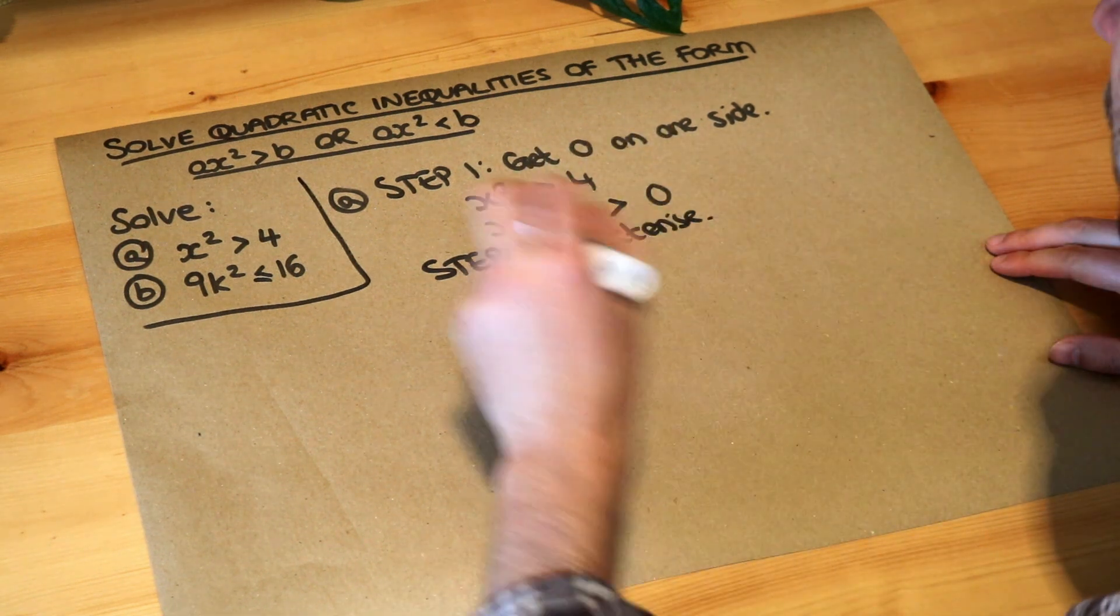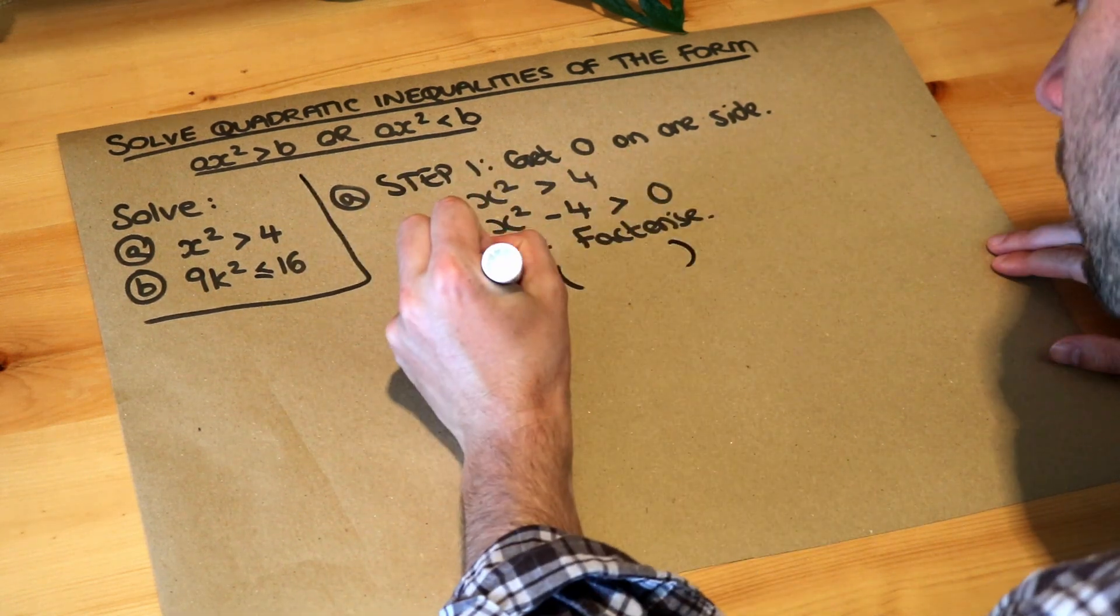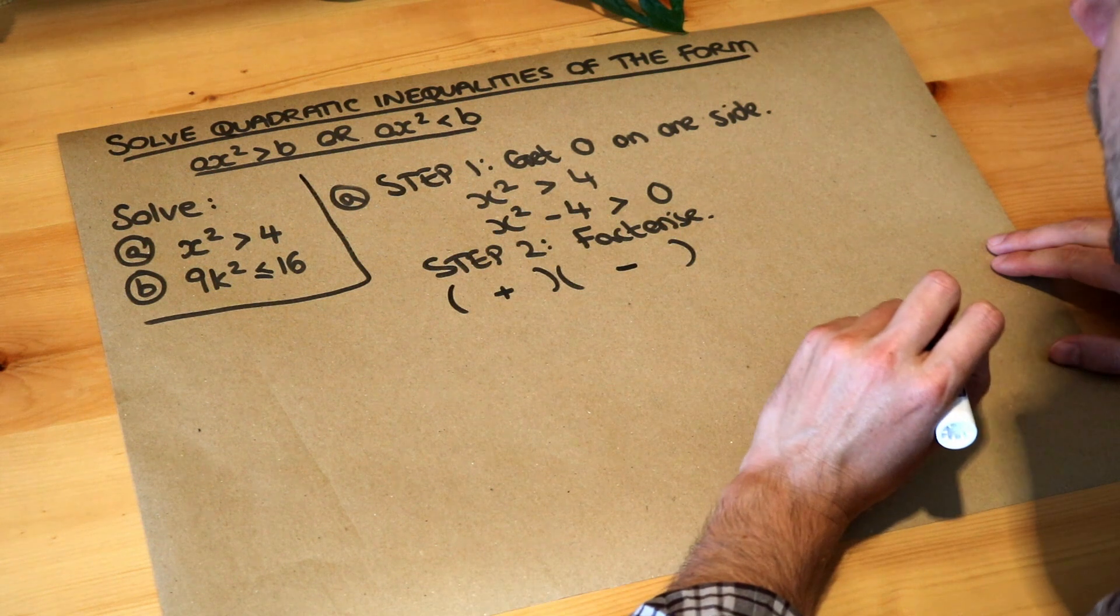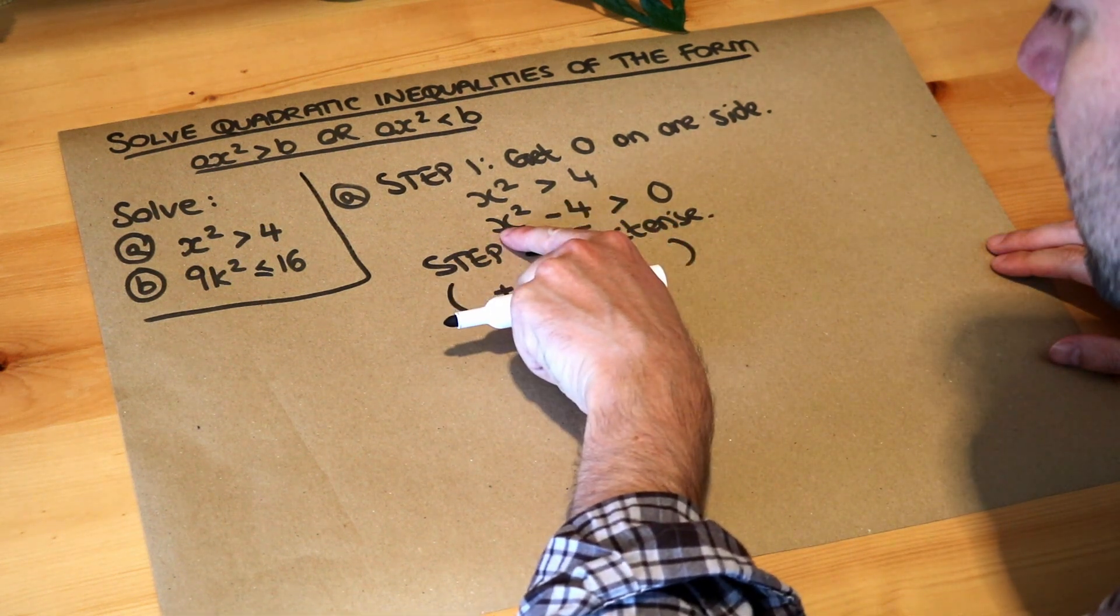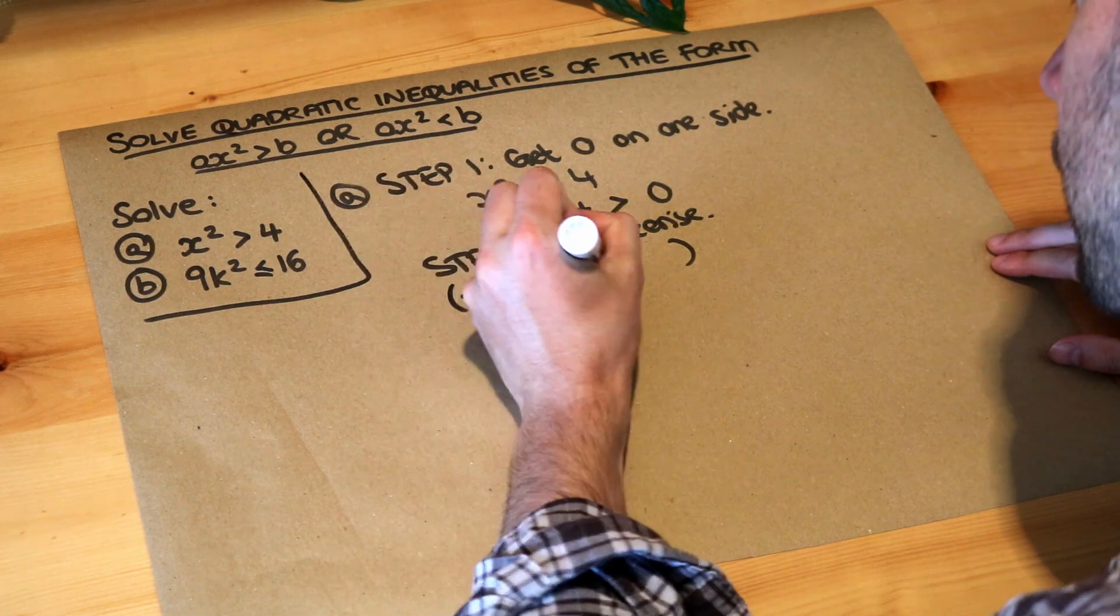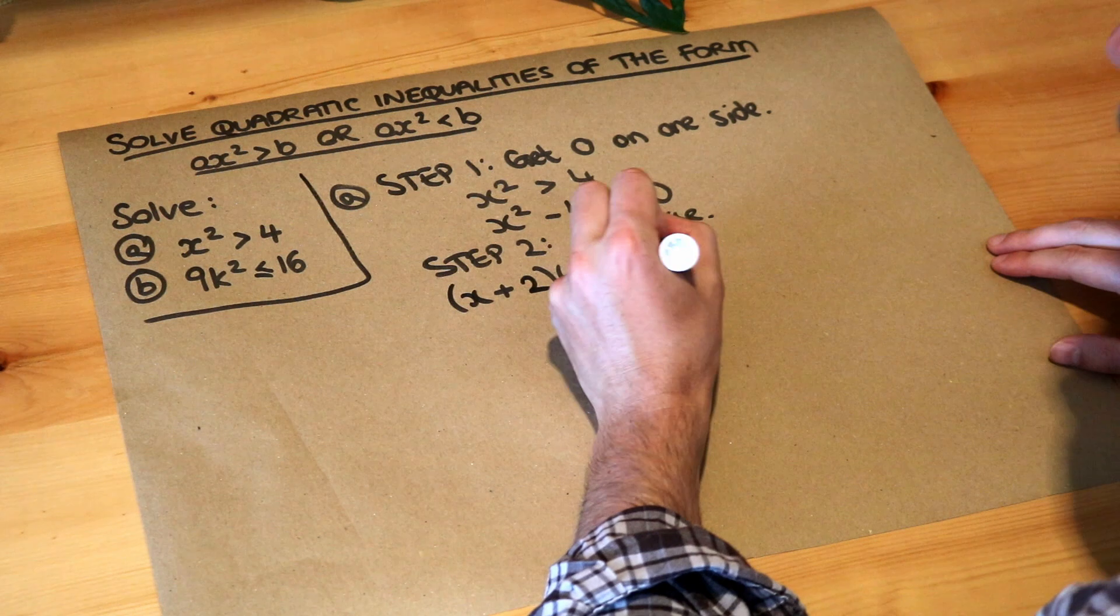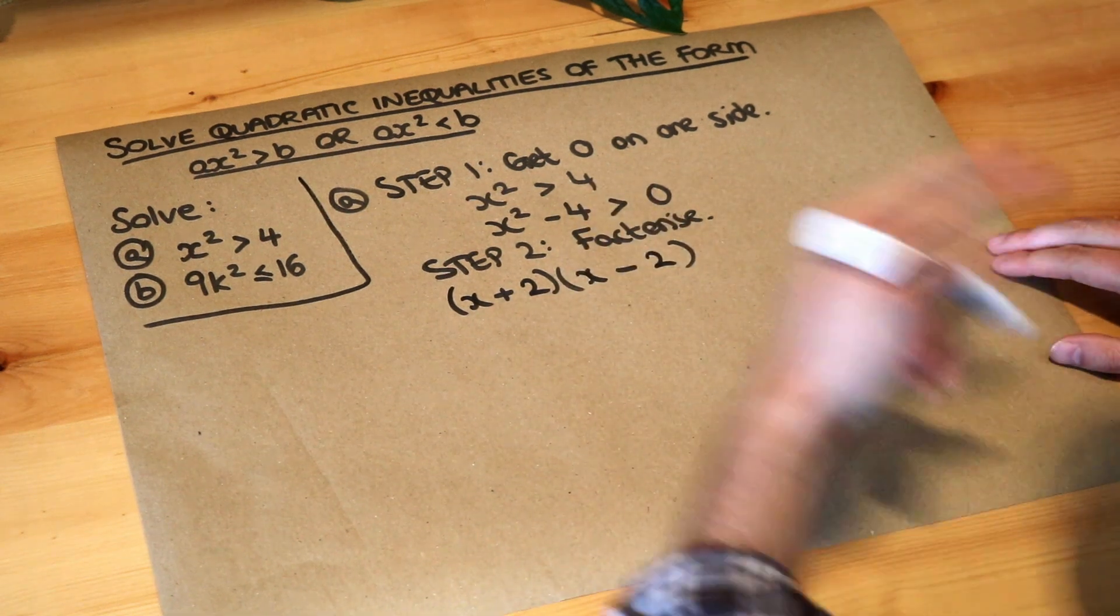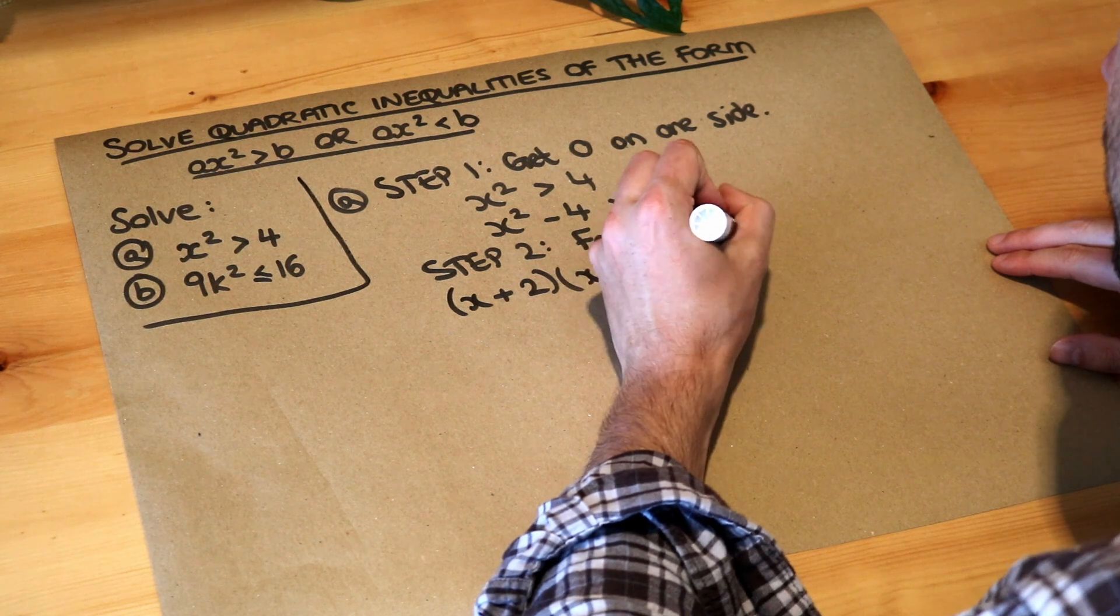Now this is a difference of two squares, and remember how the difference of two squares works: we have two brackets, one with plus in the middle, one with minus, and then we do the square root of each of these squared things. The square root of x squared is just x, and the square root of 4 is just 2. So that's how we find the difference of two squares. I have a video on that if you want to watch that first, and that is greater than 0.